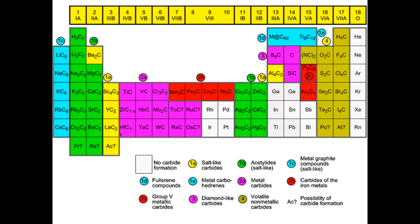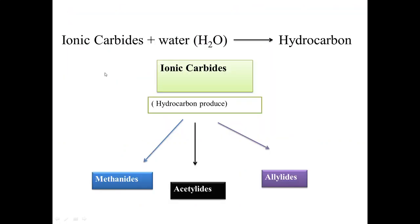Salt-like or ionic carbides are formed by the elements shown in yellow on the periodic table. When ionic carbides are hydrolyzed — that is, when they react with water — they produce hydrocarbons. Ionic carbides produce different types of hydrocarbons on hydrolysis.